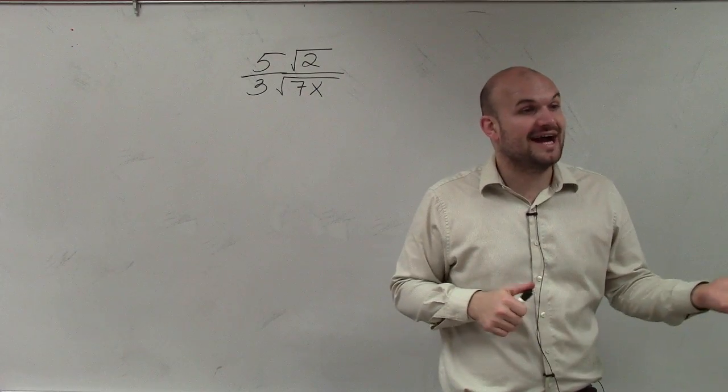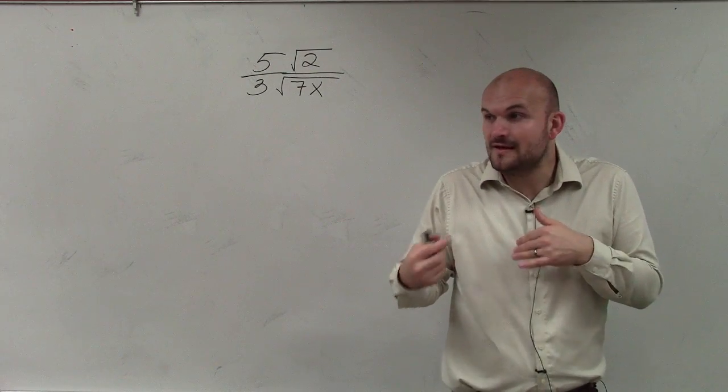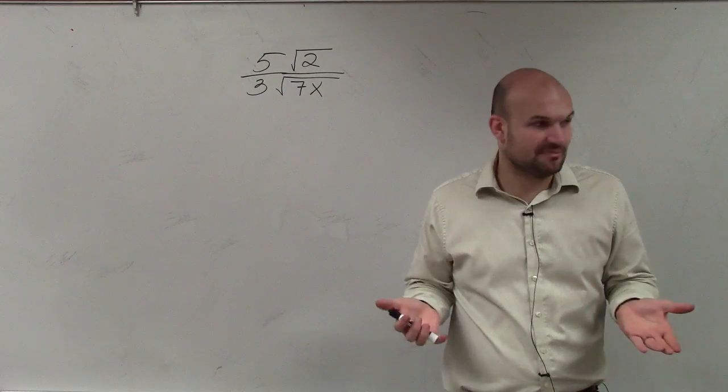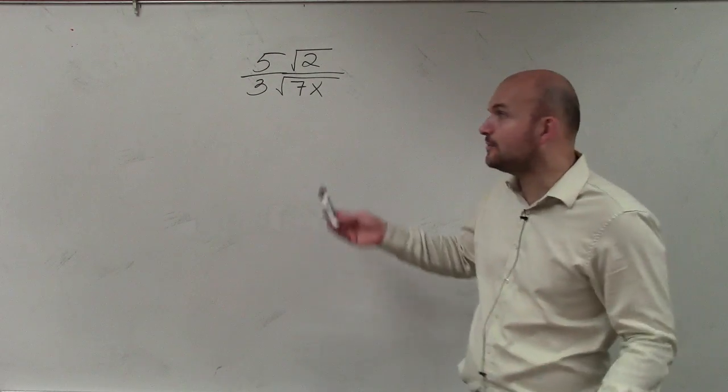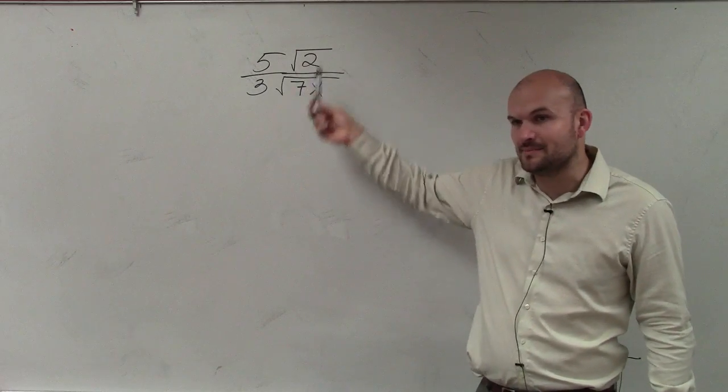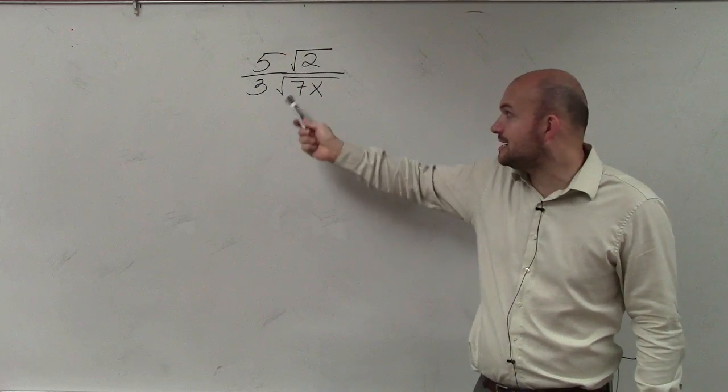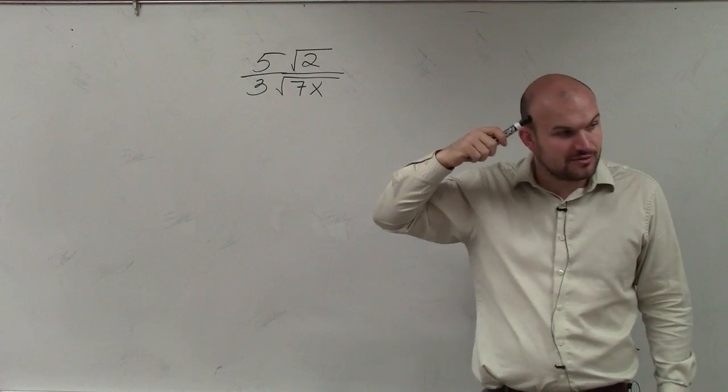And then when I said dividing, I said hey, divide first, then simplify, right? But what happens when we have something dividing where we can't divide them? Do you guys see this? Do you guys see how 7x doesn't divide into 2?